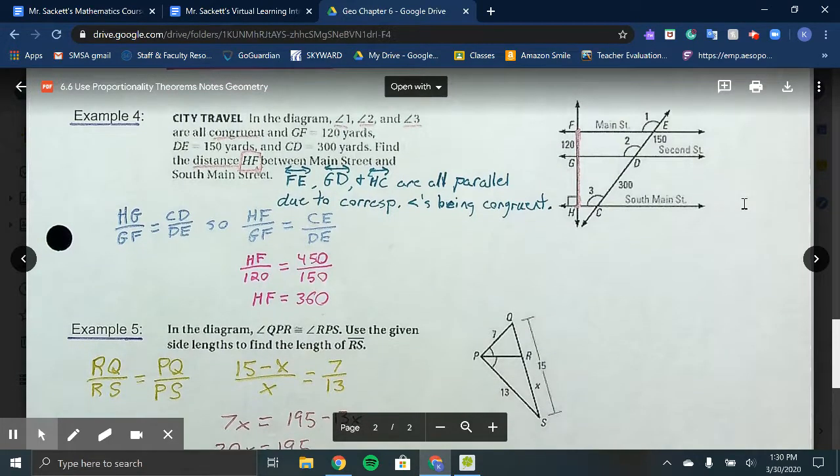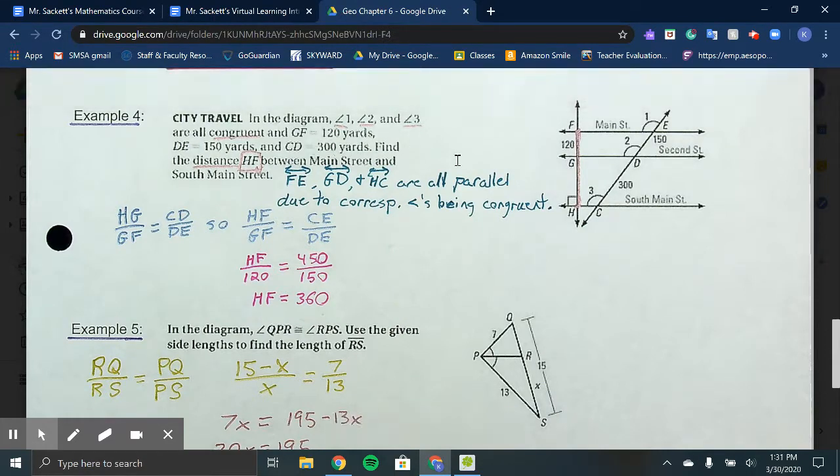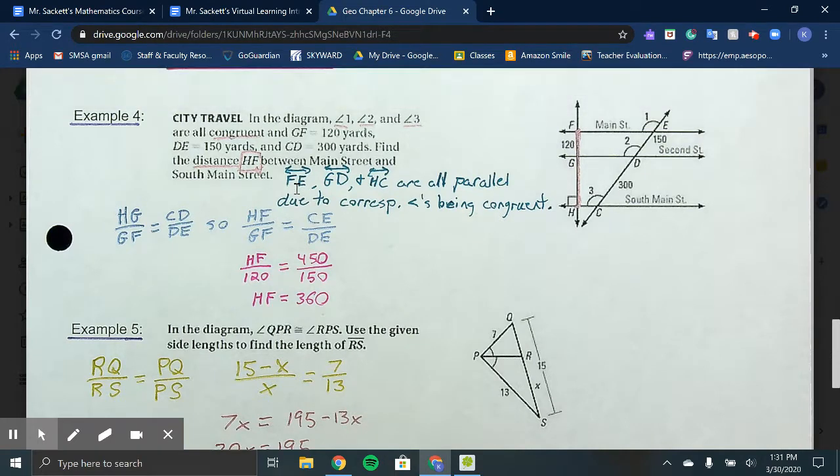Example 4 applies one of those theorems. In the diagram, angles 1, 2, and 3 are all congruent, and they gave us the measures of GF, DE, and CD. They'd like us to find the distance of HF, which would be between Main Street and South Main Street. Some pieces we know: line FE, GD, and HC are all parallel because angles 1, 2, and 3 are corresponding angles, and if they are congruent, then the lines are parallel.